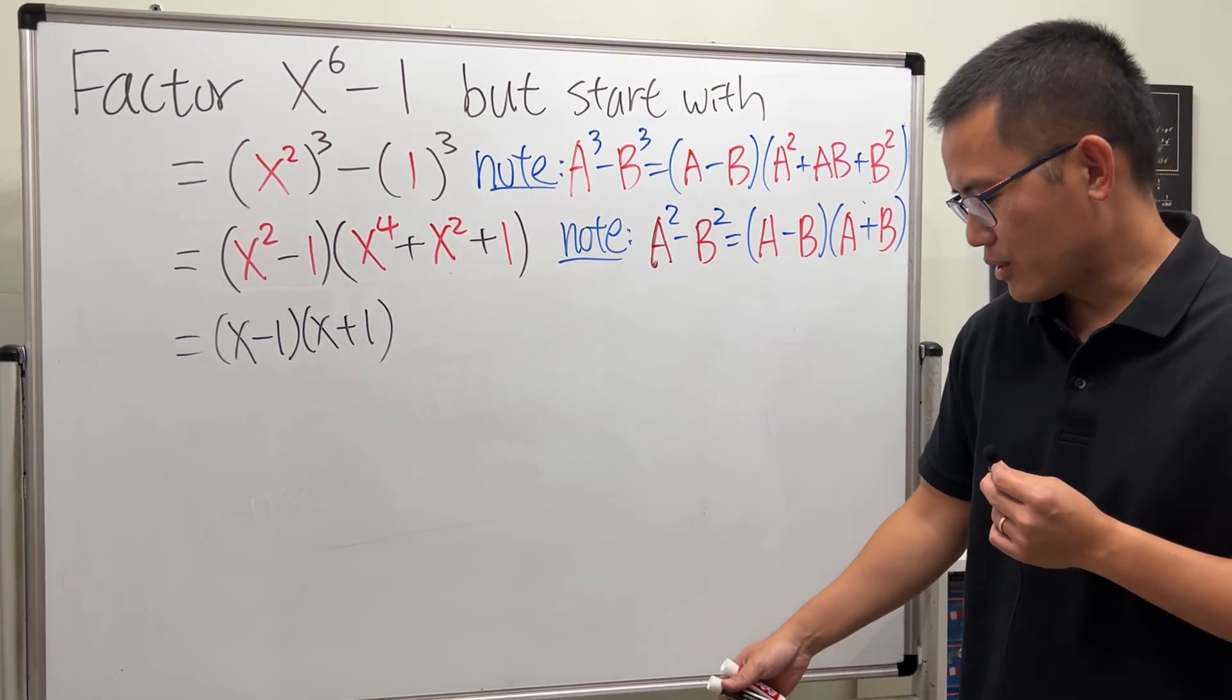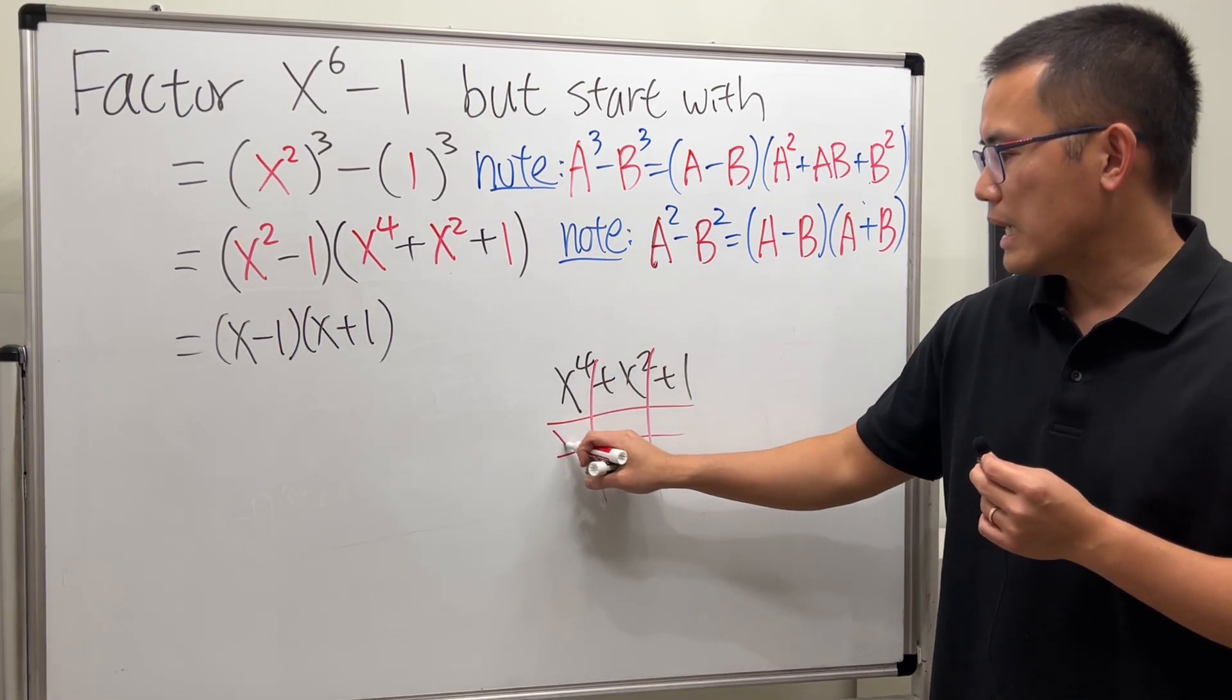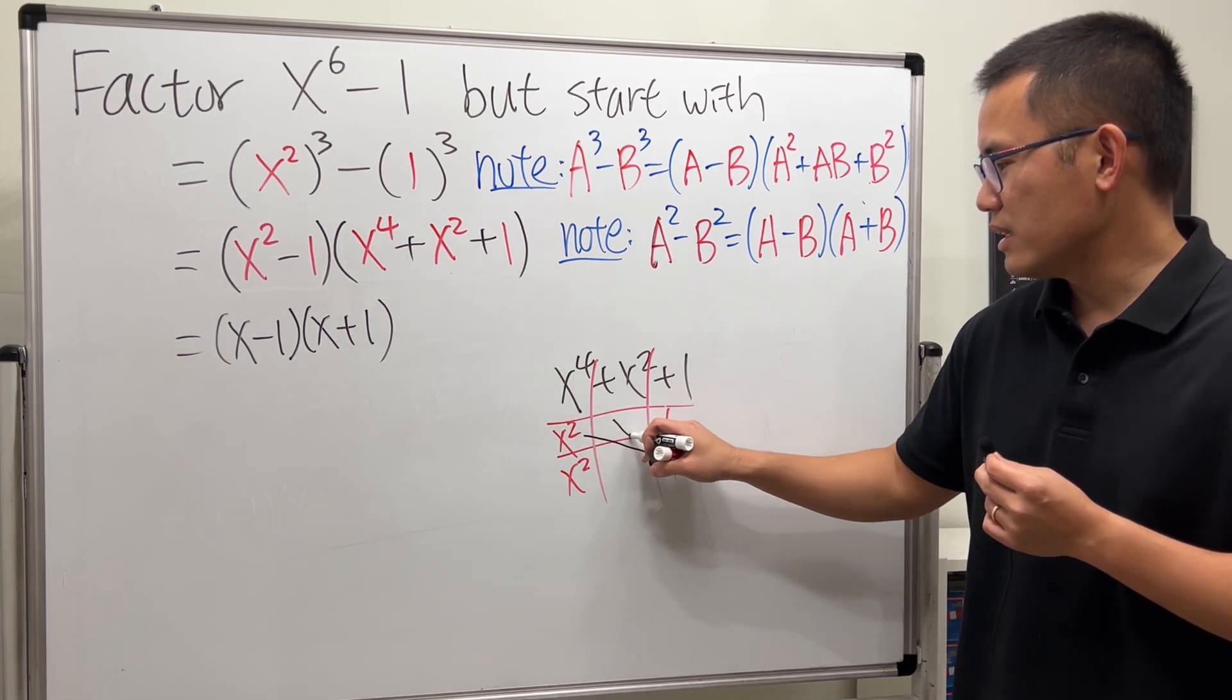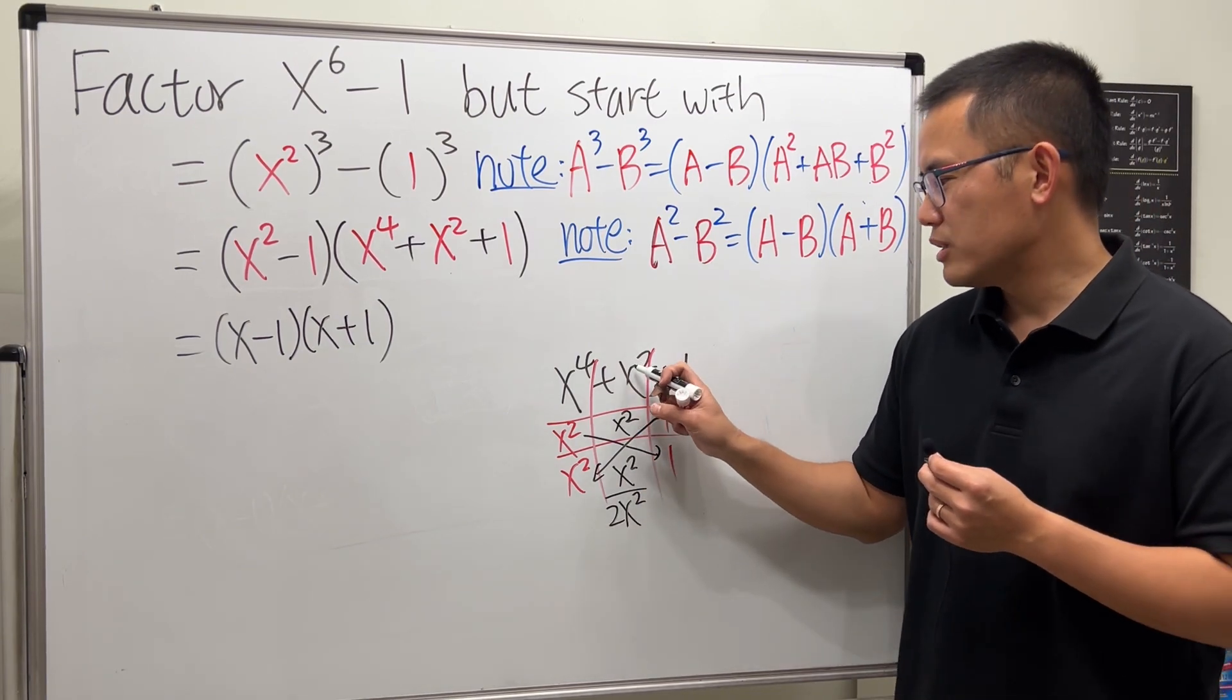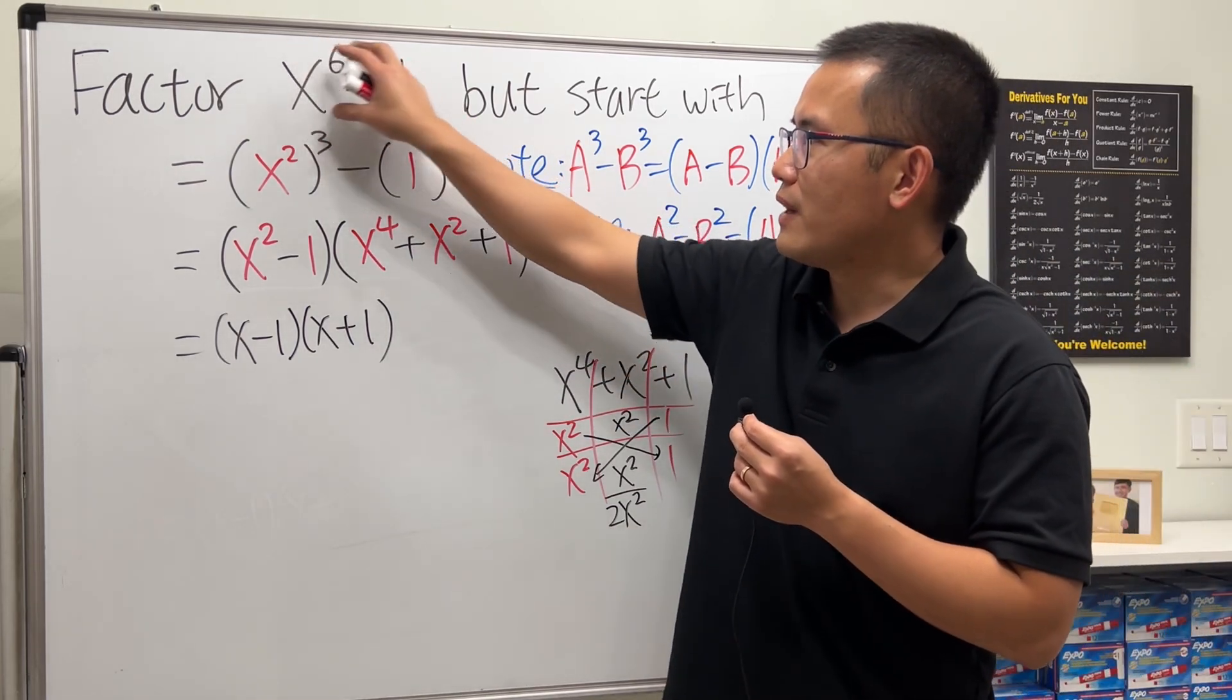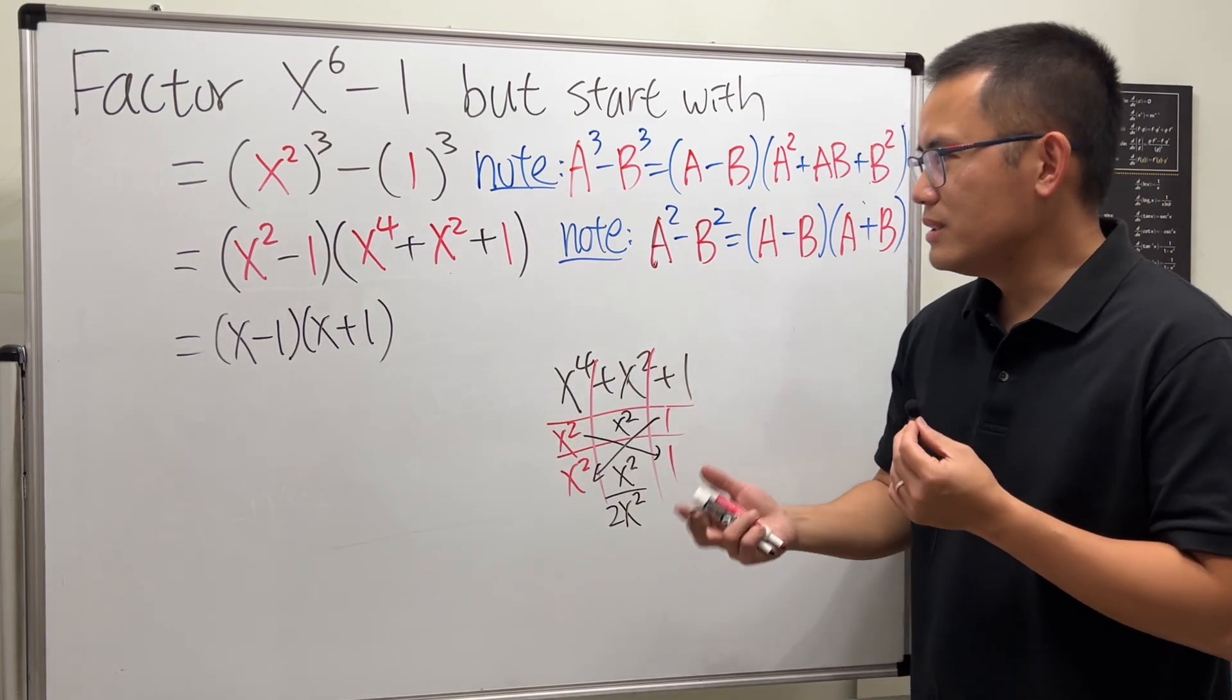It has three terms, maybe you can try the tic-tac-toe method. So what I mean by that is we can write it down like this: x⁴ + x² + 1 and then draw the tic-tac-toe box. And then perhaps we need x² and x², but here we can have let's say 1 and 1. This is not going to work because x² times 1 is x², 1 times x² is x². Together this is 2x², it does not match with the x² here. So does that mean this right here is not factorable? No, because in the previous video we have shown how to factor this completely.